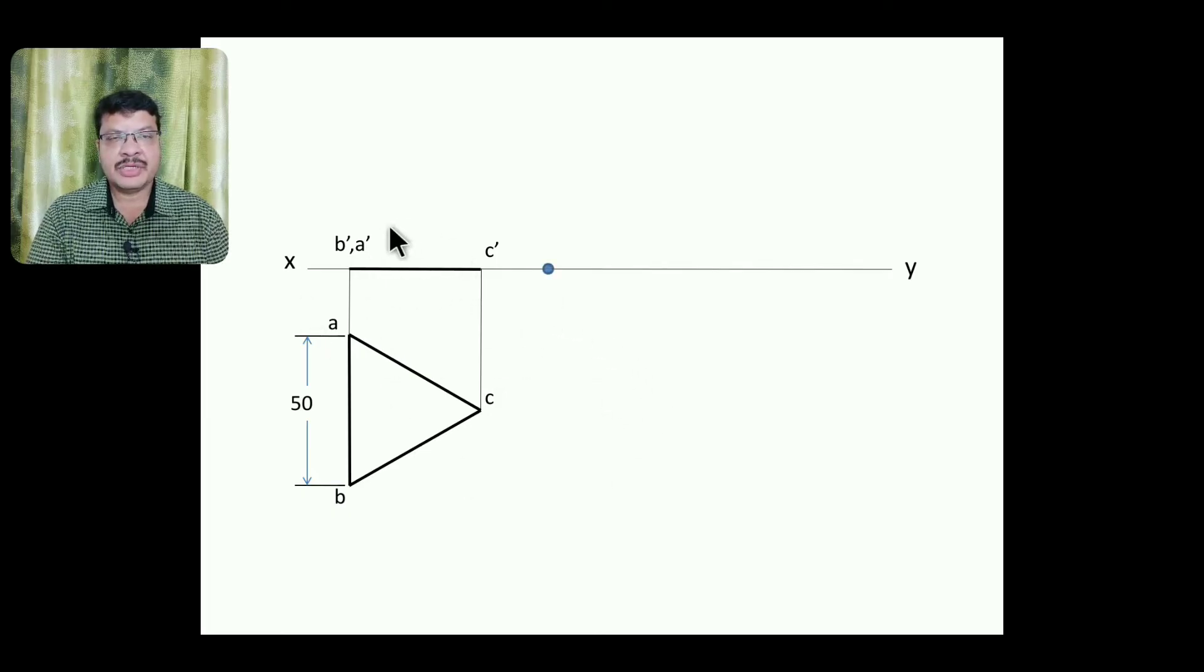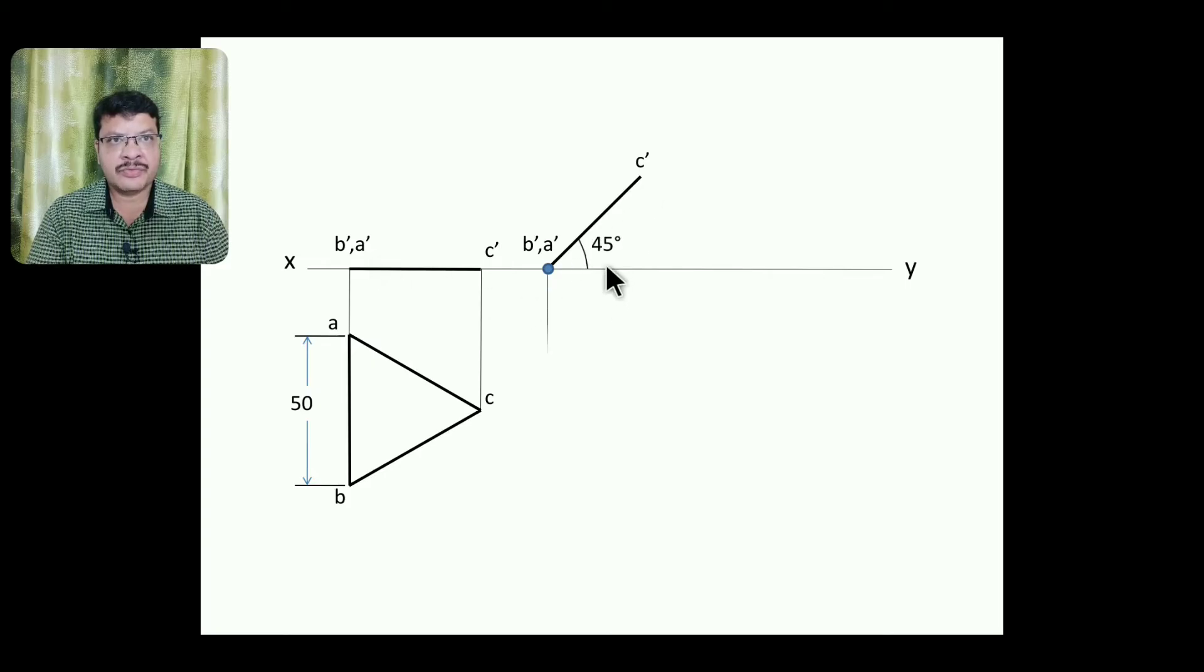Then we have to represent the surface inclination in the second stage. So that's why somewhere here randomly you pick one point. You call this point as B', A' from here take the length of B', A' to C', this length you measure with compass and mark that here at an inclination of 45 degrees like this.